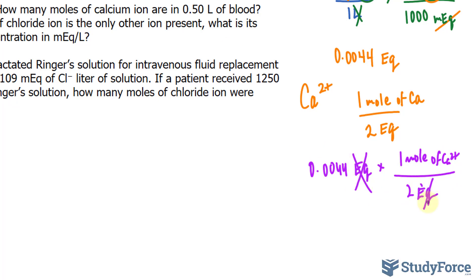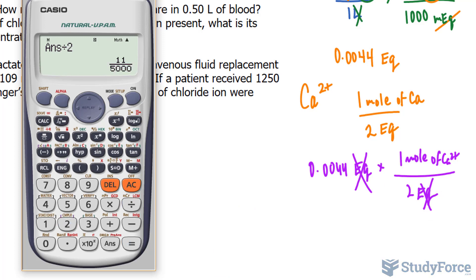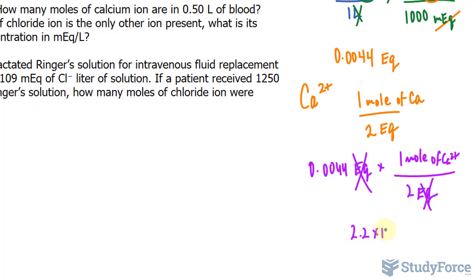Watch. This cancels out with that. And we'll take this number, divide it by 2, and we end up with 2.2 times 10 to the power of negative 3 to the correct number of significant figures. 2.2 times 10 to the power of negative 3 moles of calcium.